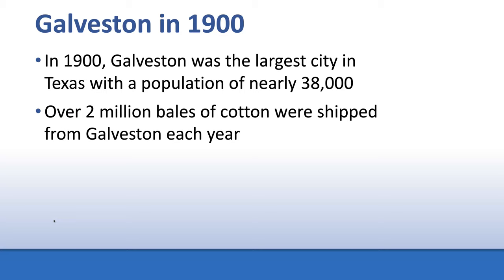Galveston was a huge city located right on the coast of Texas with a large docking area for ships. Ships would come in, unload cargo to be dispersed throughout Texas, then be loaded with other cargo and shipped out around the world. Over 2 million bales of cotton were shipped from Galveston every year, making it essential to Texas's economy.